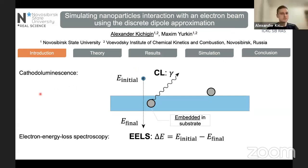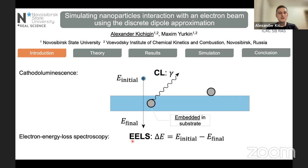My name is Aleksandr Kitschikin and our work is devoted to simulating electron energy loss spectroscopy and cathodoluminescence in the discrete dipole approximation. Cathodoluminescence and EELS are experimental techniques performed in an electron microscope. When fast electrons interact with a particle, they lose energy, and by measuring their final energy and knowing their initial energy, the EELS spectrum can be calculated from the difference.